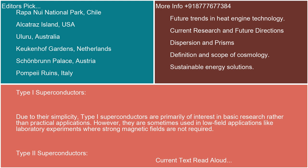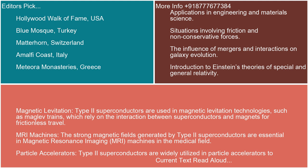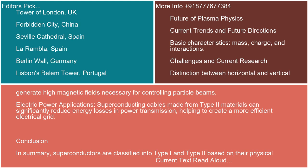Type II superconductors. Magnetic levitation: Type II superconductors are used in magnetic levitation technologies, such as maglev trains, which rely on the interaction between superconductors and magnets for frictionless travel. MRI machines: the strong magnetic fields generated by Type II superconductors are essential in magnetic resonance imaging (MRI) machines in the medical field. Particle accelerators: Type II superconductors are widely utilized in particle accelerators to generate high magnetic fields necessary for controlling particle beams. Electric power applications: superconducting cables made from Type II materials can significantly reduce energy losses in power transmission, helping to create a more efficient electrical grid.